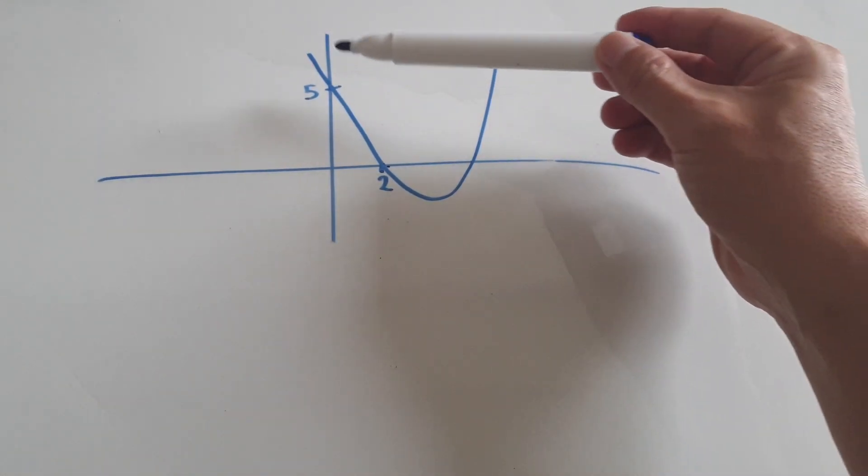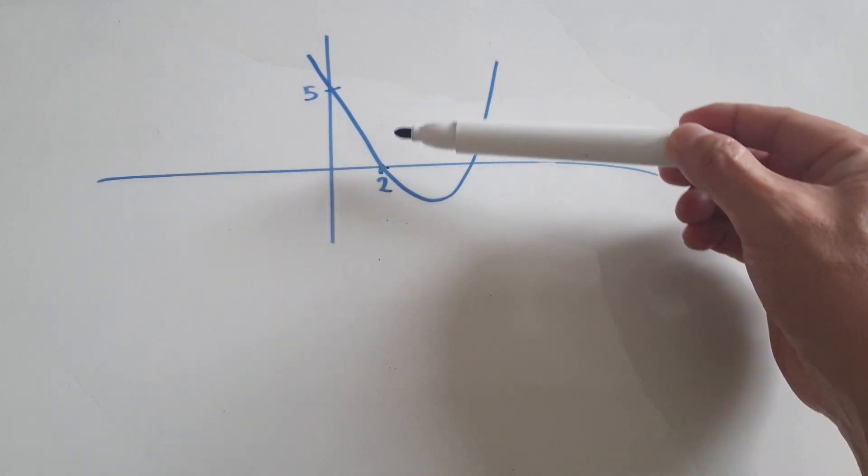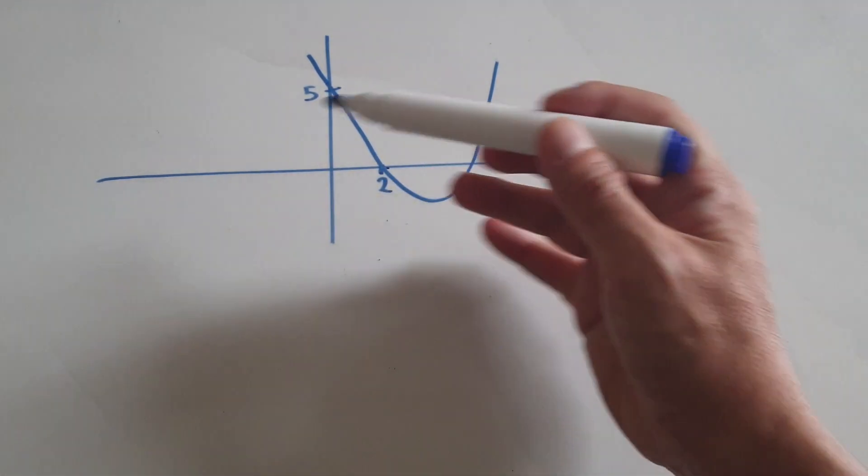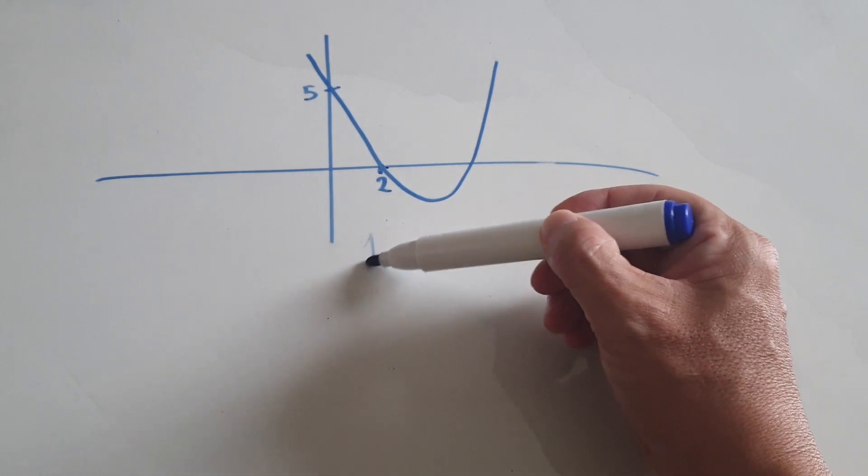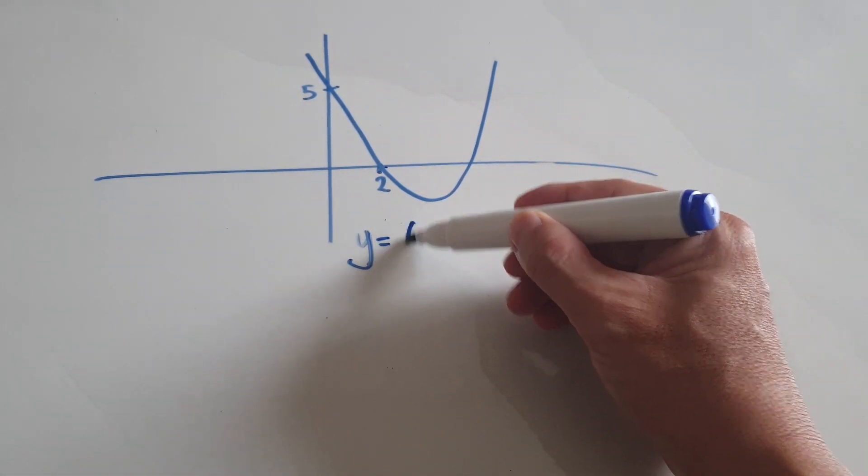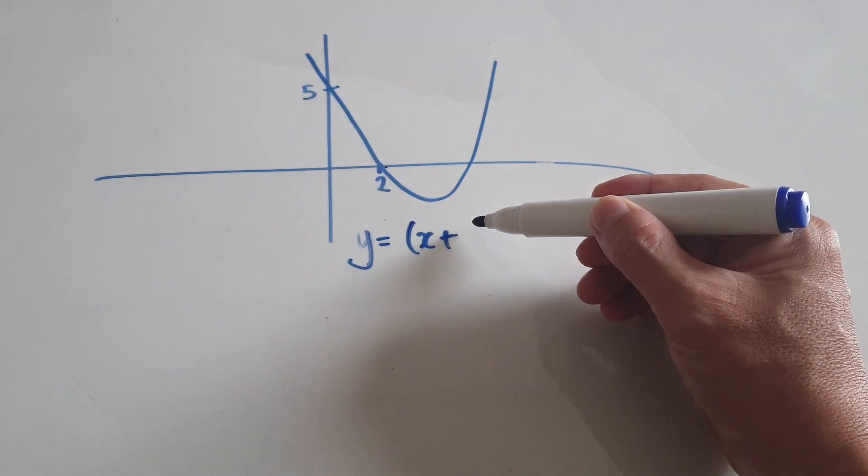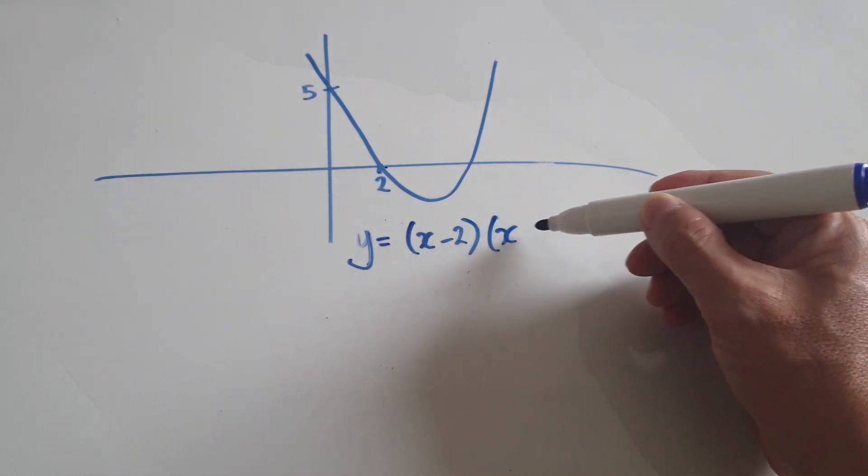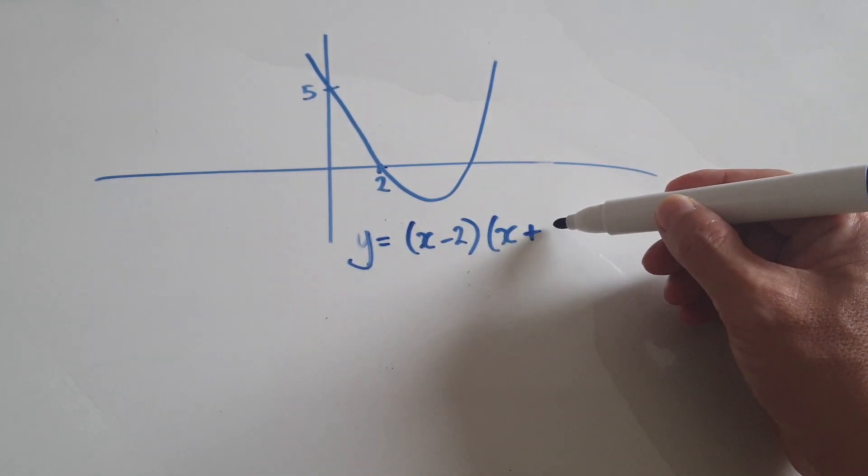Come up with a quadratic equation where the intercept is 5 and one of the roots must be 2. Okay, so to do this, if you know the root is 2, you know the quadratic is of the form y equals x minus 2 times x plus whatever.